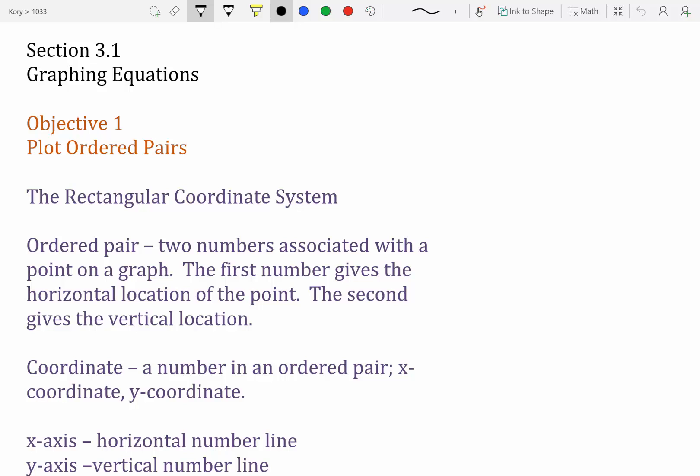The rectangular coordinate system, which is what we do to graph things, that's x and y. Ordered pair, that's two numbers associated with a point on the graph.